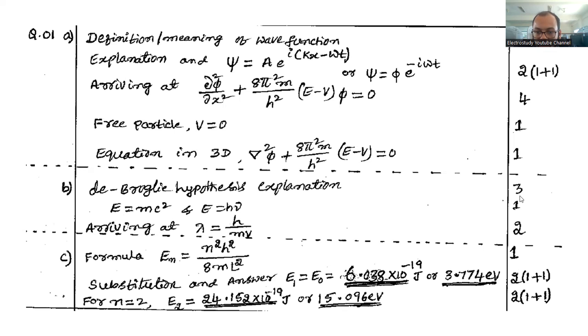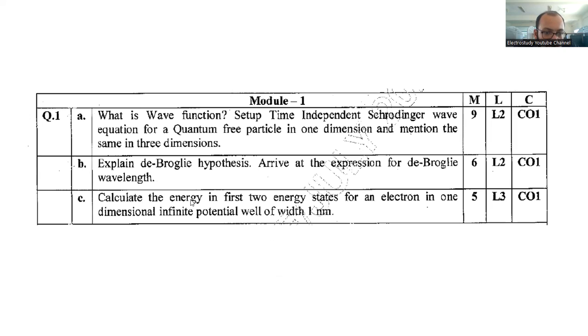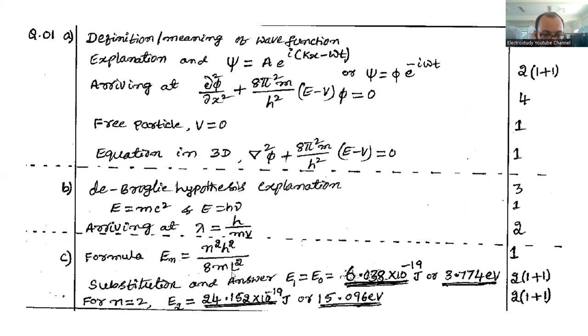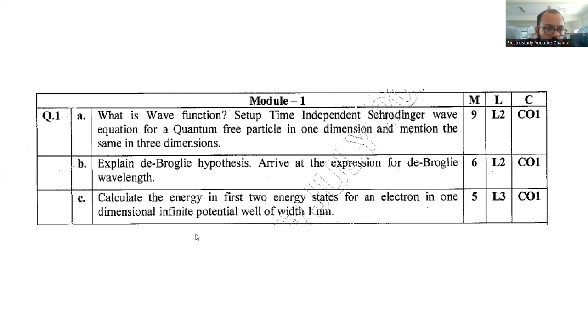Then calculate the energy of first two energy states for electron one dimensional in infinite potential well with one nanometer. So you have to follow this particular expression. Please take care of this expression formula you have to note down and the condition you are supposed to mention. Ultimately you should get the value of E₂ equal to 15.09 electron volt. Prepare accordingly and write up.